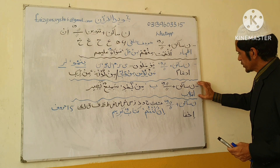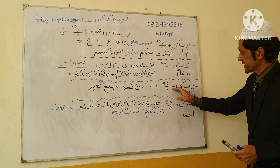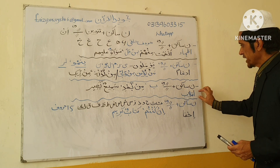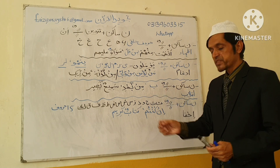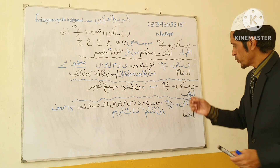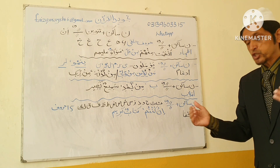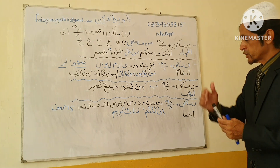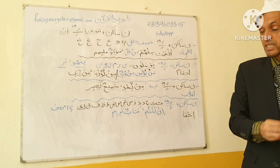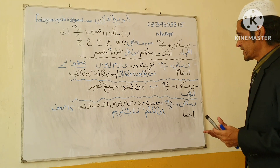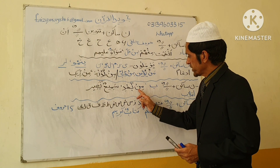Now, when after Noon Saakin or Tanween comes Ba, we make Iqlaab. Iqlaab means to change — to change one letter with another. When after Noon Saakin Ba comes, we change Noon with Meem. For example: 'Min Baadi' — this Noon is changed with Meem. That's why it is called Iqlaab. Also: 'Samee'un Basiir' — Tanween before Ba, so we also make Iqlaab.